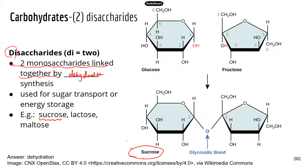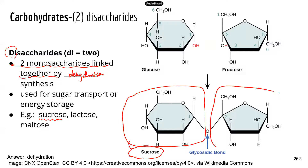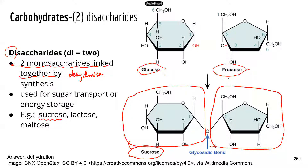Sucrose has two monosaccharides linked together — one glucose and one fructose. So you actually take in a lot of fructose if you cook or bake with sugar, because fructose makes up half of the sucrose — the table sugar that you use.